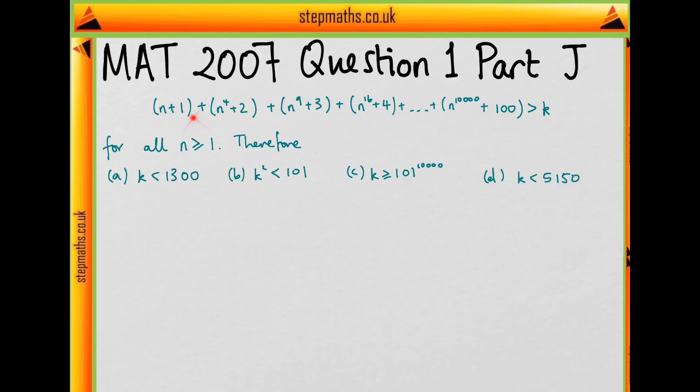And this sum is going to get bigger if we make n bigger. So the smallest value that this sum can take is when n is equal to 1.